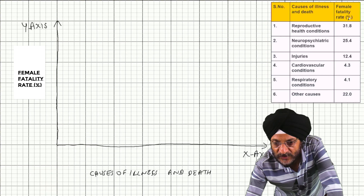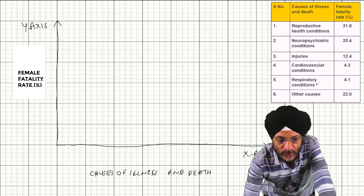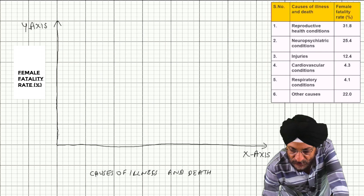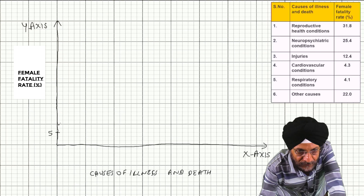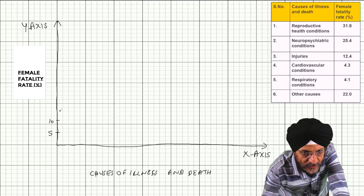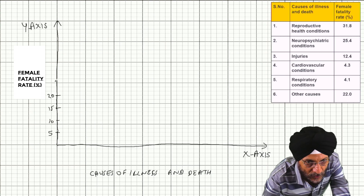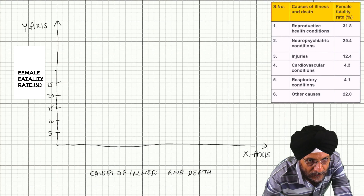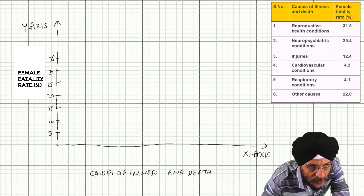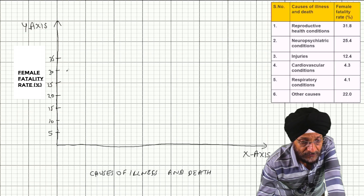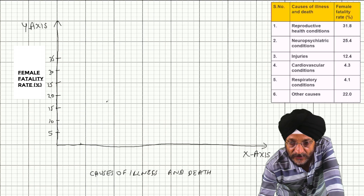What is reproductive health conditions? We can see that the maximum figure mentioned is 31.8 and the minimum is 4.1. We will now draw the graph. Here, first we will mark the scale lines so that we can plot all the figures. This is 5, here 10, 15 — after every 3 cells we are taking an interval of 5. The first condition is reproductive health conditions; we will draw the bar up to 31.8.